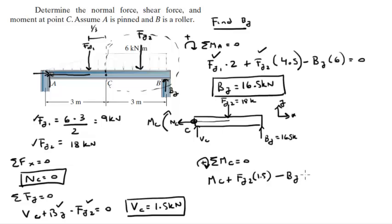Minus By times 3 because it's the distance from C to By, and all of that equals 0. So when you solve for the moment, you get that the moment is 22.5 kilonewton meters, and it's positive, so it's going clockwise in our section.